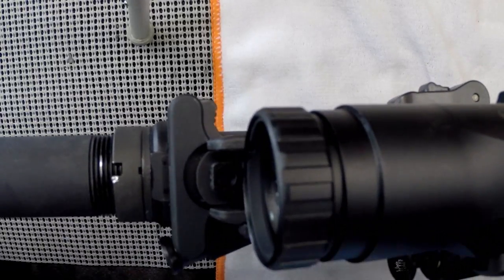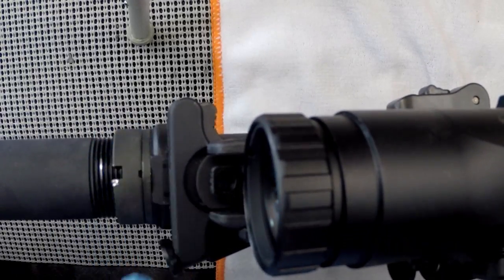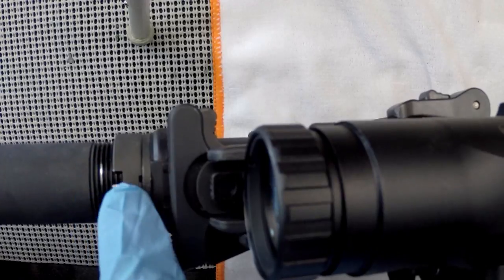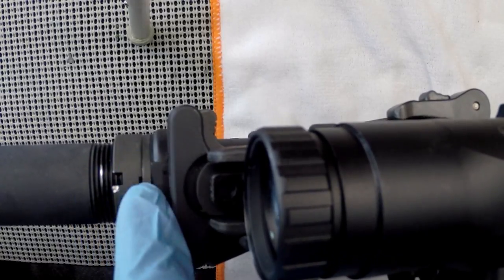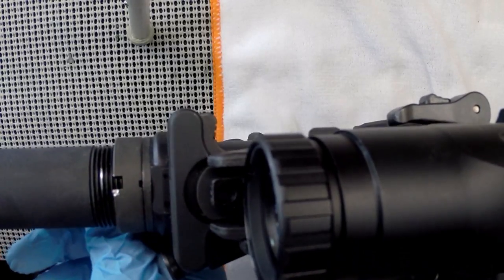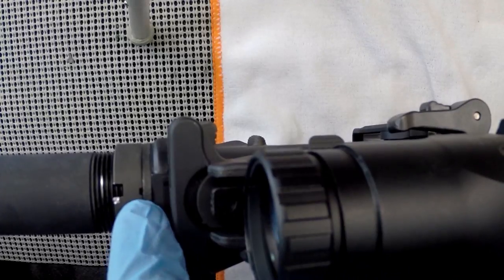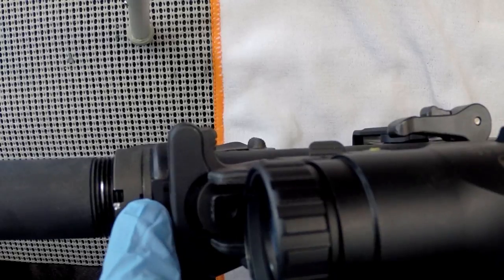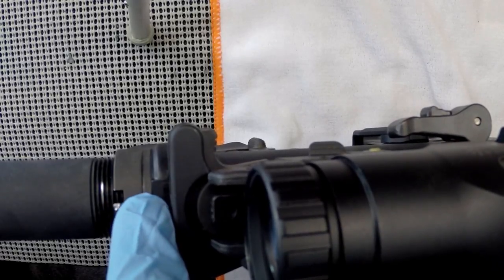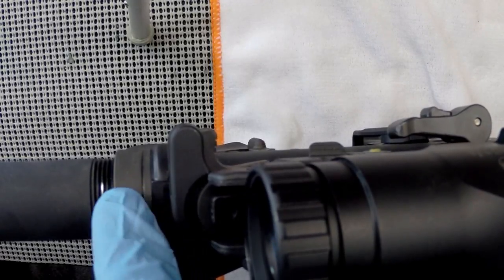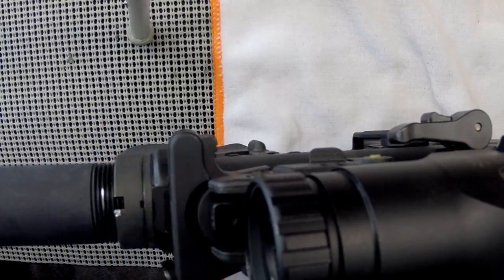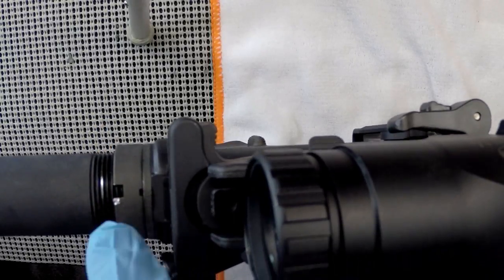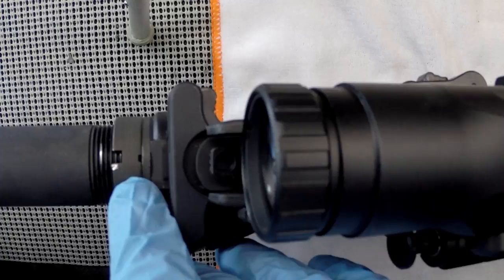In between the sling mount and the receiver you'll see this notch right here. Basically staking is just putting some of the material, or parent material, in the way to limit movement of some kind of nut. So you'll see this small notch right here. We're going to displace some of that material from the single point sling adapter into that, and that will keep that castle nut from rotating.